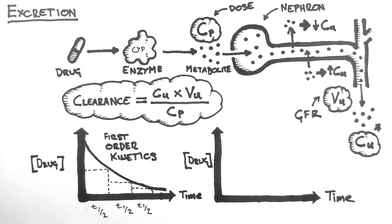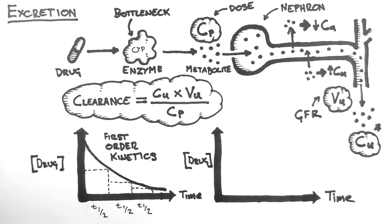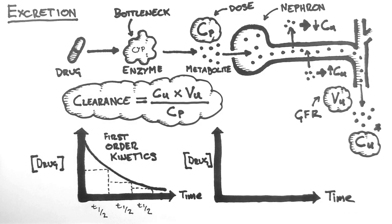This means that if more drug is added to the body, it won't change the rate of excretion because there is no extra enzyme to process the extra drug. This effectively creates a bottleneck in the process. And the rate of excretion is now independent of the concentration of drug in the plasma.